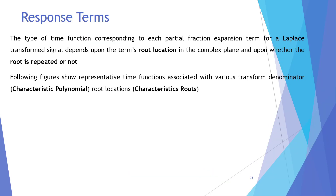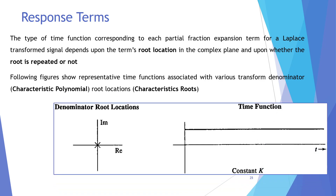The upcoming figures show representative time functions associated with various transform denominator characteristics — polynomial key root locations, or characteristic root location representative shapes. For example, first we will talk about denominator root locations. If we have a characteristic polynomial S, it is just S as a factor in the denominator, there is only one root, and that root is S equal to zero — the characteristic root located at the origin.